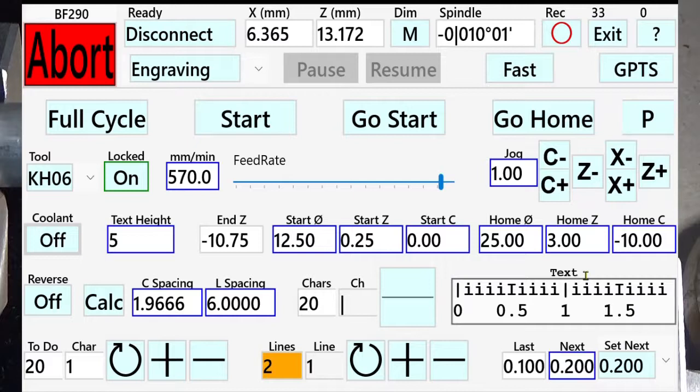I've set the home position C to minus 10 degrees, home Z to 3 millimeters, home diameter to 25, start C to 0 degrees, start Z to 0.25 millimeters. I'm going to use a grinded pin, meaning feeding into the material is quite difficult. So I start on the right of the tip, then there is no problem feeding in the tool.